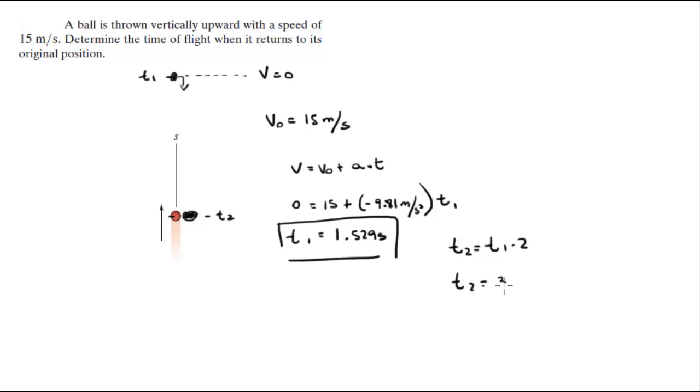So T2 is equal to 3.06 seconds. Final answer: it takes the ball 3.06 seconds to return to its original position.